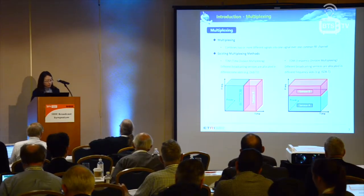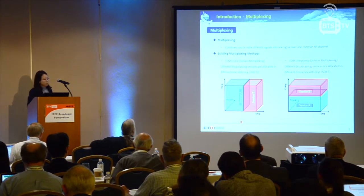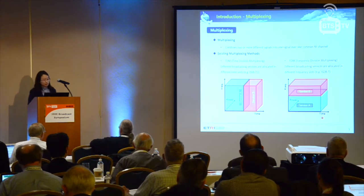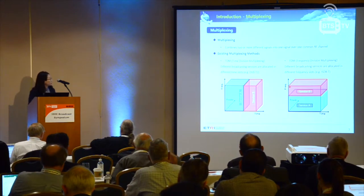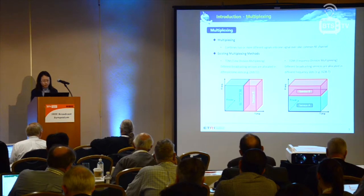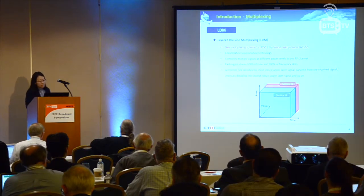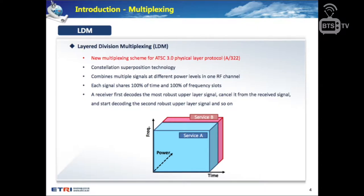Multiplexing is combining two or more different signals into one signal over a common RF channel. TDM and FDM allocate two services A and B separately in time and in the frequency domain respectively. But in LDM, the layer division multiplexing, two services are superimposed at the constellation level. Therefore they share the time and frequency resources.